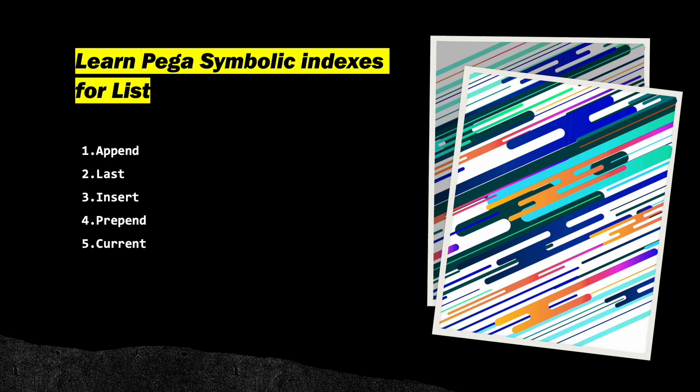The first one is append. Append simply adds one item at the end. Let's say you have an employee list with two employees already there, and you want to add a third one but you don't know the indexes or the size of your page list — then use append. It will add to that list one more item at the last index. If you already have three employee IDs and want to add another attribute on the last index, in that case we can use last. Let's go into Pega and do hands-on.